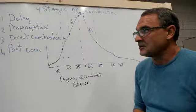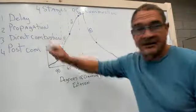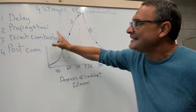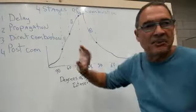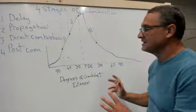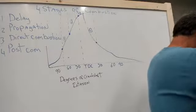So the four stages represent the delay, I've got it written up here, flame propagation, direct combustion, and post-combustion. And I think this chart really explains what's going on there.